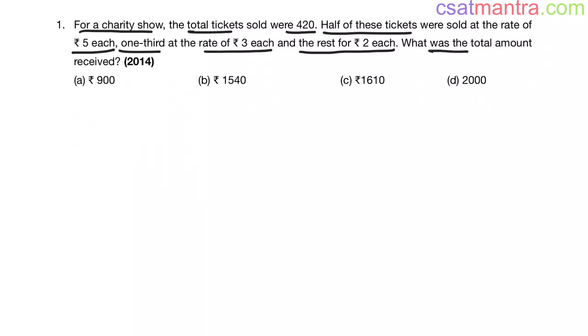What was the total amount received? This question is asked in 2014. This question is from algebra chapter, finding out the value. It is given that there are three types of tickets: 5 rupees tickets, 3 rupees tickets, and 2 rupees tickets.